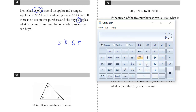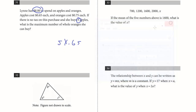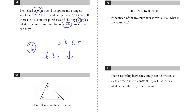Doing it all on the calculator, we get 6.3 repeating. Whenever you see a question like this — and they even said 'whole oranges' — this is not a rounding question. Even if the answer were 6.99, you couldn't buy that extra full orange. You have to go down to the integer below. So the answer is 6.